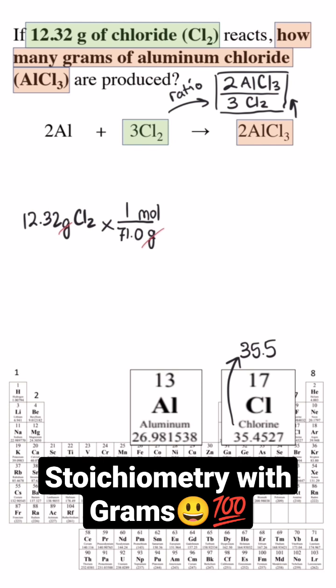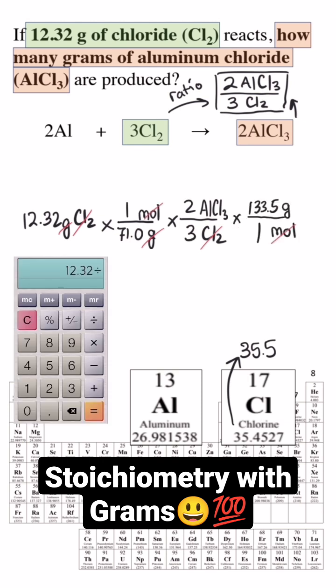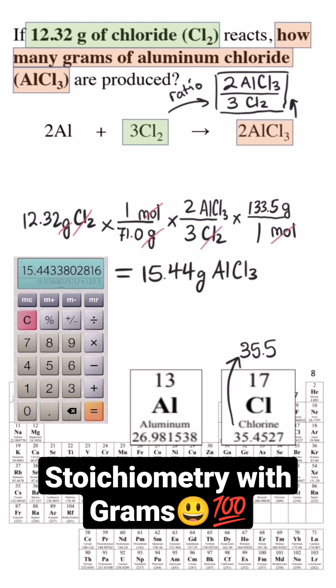Next I can convert from the starting chemical of chlorine to the new chemical of aluminum chloride using this mole ratio. Finally I will convert my answer to units of grams by multiplying by the molar mass of aluminum chloride. I can plug all this into my calculator and get 15.44 grams of aluminum chloride.